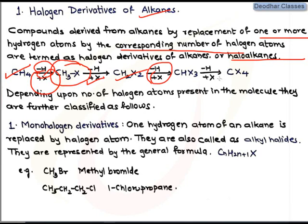Depending upon the number of halogen atoms present in a molecule — that is, how many hydrogen atoms are replaced with halogen — we can further classify halogen derivatives of alkanes. The first category is monohalogen derivatives. When only one hydrogen atom of an alkane is replaced with one halogen atom, we get monohalogen derivatives of alkanes, also called alkyl halides.